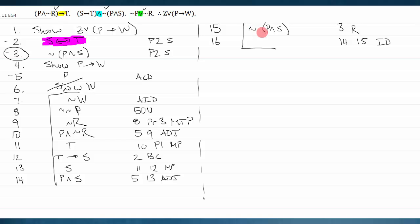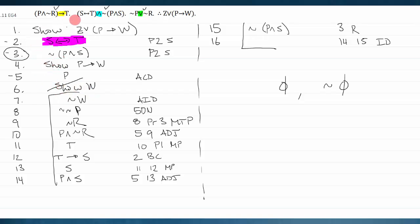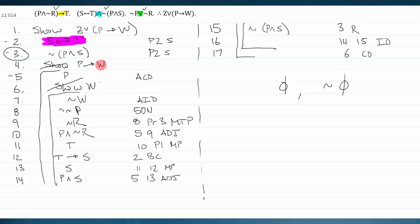To recap those last steps: I generated p and s because I wanted it to contradict line three. Before the contradiction, I always need to bring the contradicting line within the current show I'm working on. Lines fourteen and fifteen are opposites — the form phi and not-phi — here it just happens to be the more complex 'p and s' and 'not (p and s).' They have nothing to do with w, and that's fine. Under the assumption that w was false, I got a contradiction, so w must be true.